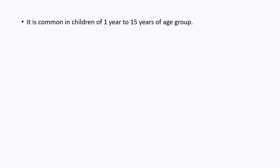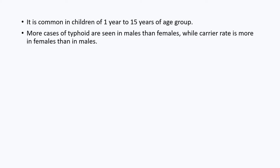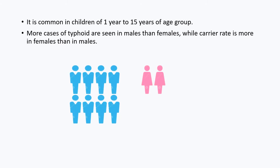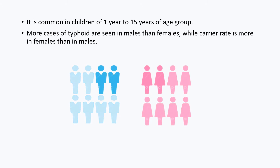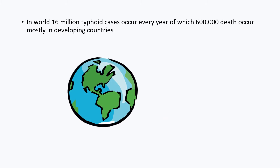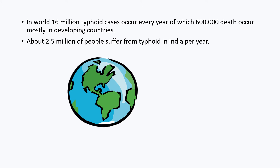It is common in children of 1 year to 15 years of age group. Research found that more cases of typhoid are seen in males than females, while the carrier rate is more in females than in males. In the world, 16 million typhoid cases occur every year, of which 600,000 deaths occur mostly in developing countries, and about 2.5 million people suffer from typhoid per year in India.